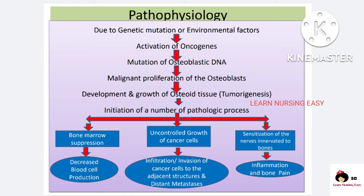In pathophysiology, when there is any genetic mutation or environmental factor, there is activation of oncogenes due to deactivation of the tumor suppressor gene. This leads to osteoblastic activity — that is development and multiplication of the DNA of bone tissue — and malignant proliferation of osteoblasts, meaning increase in the size and growth of cancer cells. There will be tumorigenesis where osteoid tissue develops and grows faster. One result is bone marrow depression — the bone marrow is responsible for producing blood cells, so when it is suppressed, there is decreased blood cell production.